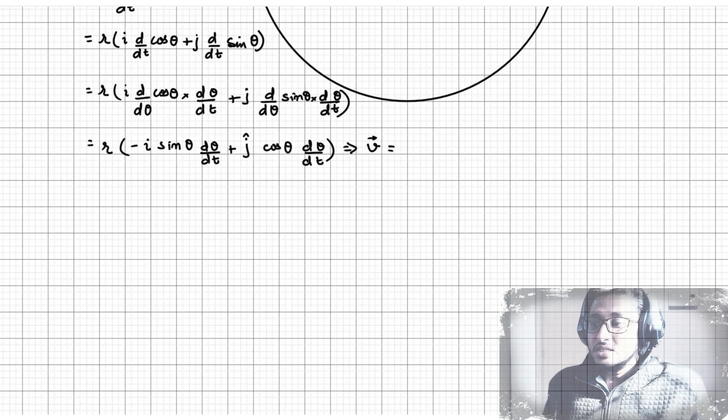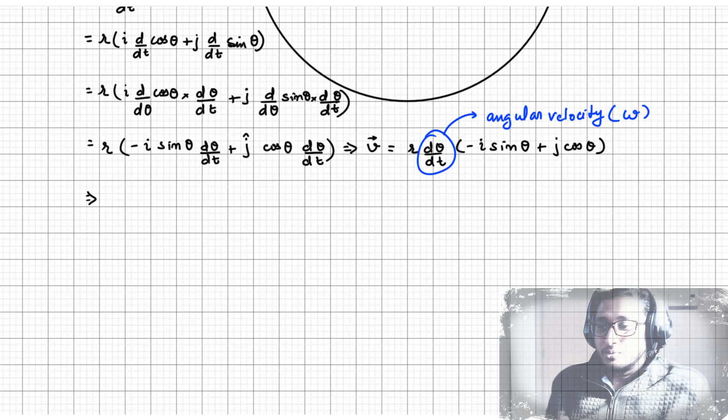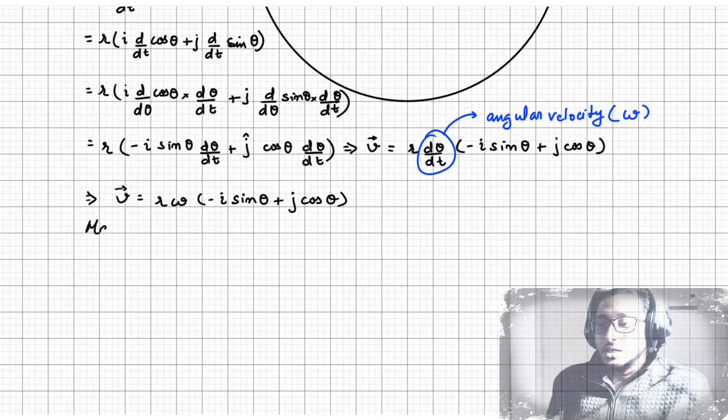The common d theta by dt can be taken out of the bracket. Since d theta by dt is the angular velocity, which is often represented by omega, the instantaneous velocity can be written as r omega times minus i sin theta plus j cos theta. The magnitude of instantaneous velocity, if we calculate, will be r omega.